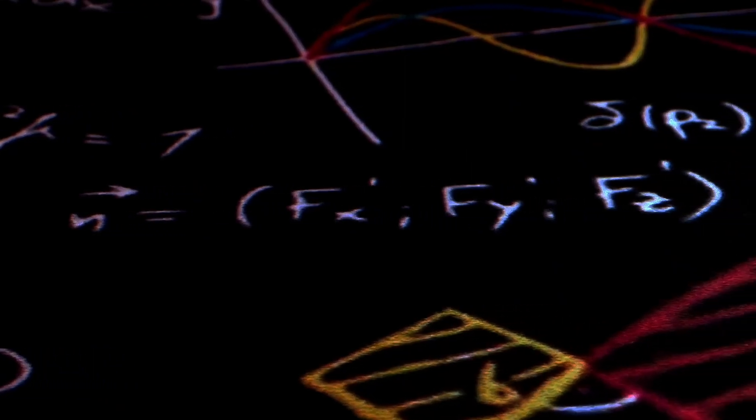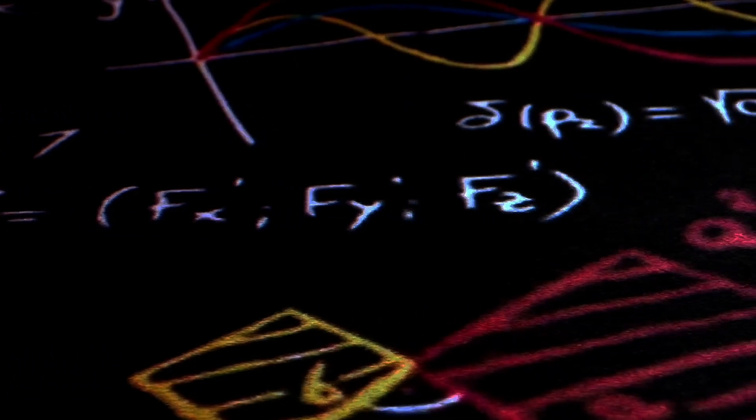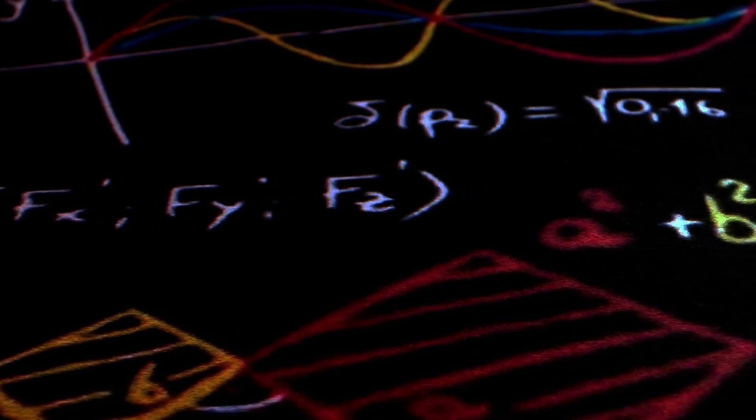Another fascinating contender is F(R) gravity, where the F stands for a function of the Ricci scalar R. This theory modifies Einstein's equations to include more complex terms, potentially explaining cosmic acceleration without dark energy.